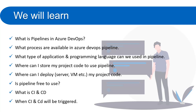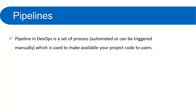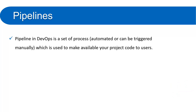First, let's understand what is a pipeline in Azure DevOps. Pipeline in DevOps is a set of processes which is used to make your project available to users. This set of processes can be triggered automatically or manually. The main use of pipeline is to send your code from one place to another so that it will be available to all users. If you deploy your code to a particular server, only then your code will be available to all users.